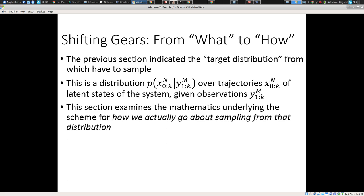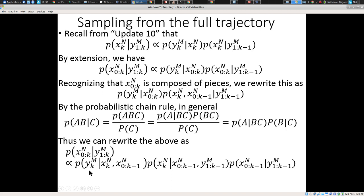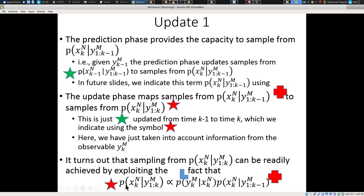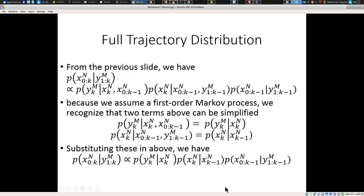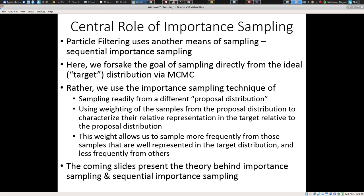We've characterized the target distribution from which we have to sample — for the full trajectories, and for just the state at time k given all the data before. The fundamental tool we make use of here is what's called importance sampling: if we want to sample from a target distribution but don't have an easy way to do this, instead we sample from a proposal distribution which is easier to sample from, and then each sample is given a weight. That weight is higher if the ratio of the target distribution value to the proposal distribution value is high — meaning the sample is underrepresented by the proposal. We can then draw from these weighted samples — which we'll be calling particles — with probability proportional to that weight.